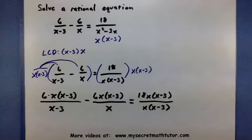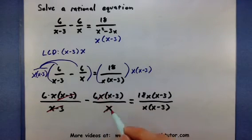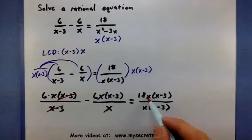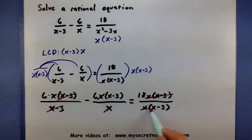Now, when you first multiply, it may look really complicated, but don't worry, lots of stuff will cancel out. Here I have my x minus 3's that are gone. Here the x's will cancel. And here both the x and the x minus 3 will cancel.